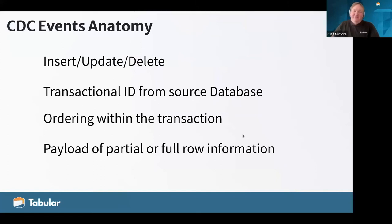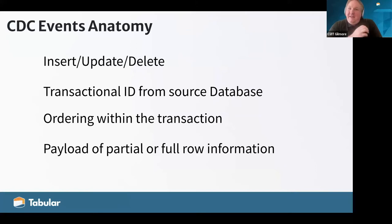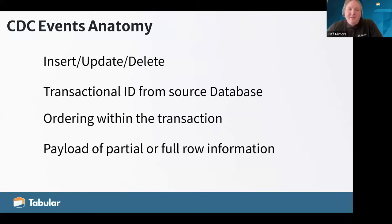A CDC event has a certain anatomy. It has an operation code — insert, update, or delete — so we know what it is. It also has some sort of transactional ID, which might be something like a timestamp, though timestamps have granularity problems since two events could occur in the same millisecond on the same object. Getting the ID from the source database is really important. There's also ordering within a transaction, which you need to unwind multi-table commits and ensure downstream databases are updated in the correct synchronization. The message may contain a partial row or the full row including unchanged fields.